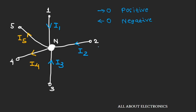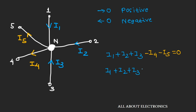So here, currents I1, I2, and I3 are entering into the node, so we consider them as positive current, while currents I4 and I5 are leaving the node, so we consider them as negative current. According to Kirchhoff's law, the algebraic sum of all these currents is zero. So we can write: I1 + I2 + I3 − I4 − I5 = 0, or equivalently, I1 + I2 + I3 = I4 + I5. That is, the currents entering the node equal the currents leaving the node.